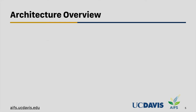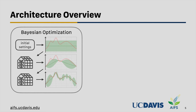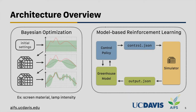Here is a quick overview of our algorithm. Given the different types of controls, we designed two modules. The first is Bayesian optimization, used on controls that are fixed throughout the planning period, such as screen material or lamp intensity. For the remaining controls — such as heating, CO2 set points, and ventilation — we use model-based reinforcement learning. These two modules form a closed learning loop, and their results feed back onto each other to achieve an overall better control scheme.